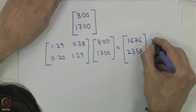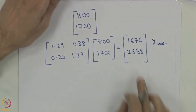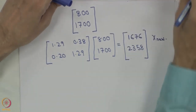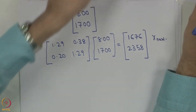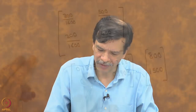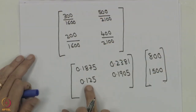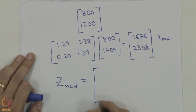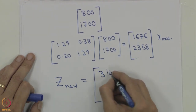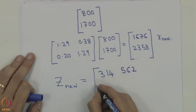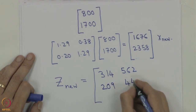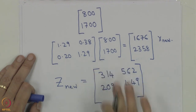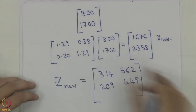Now we multiply the new output values by the A coefficients — 0.1875, 0.2381, 0.125, and 0.1905 — assuming these remain constant. This gives us the new Z matrix values: Z11 = 314, Z12 = 562, Z21 = 209, Z22 = 449. You can check these multiplications for yourself to verify these numbers.